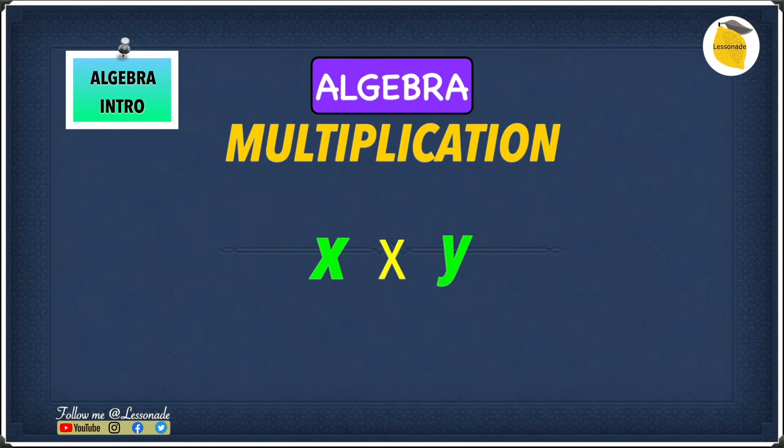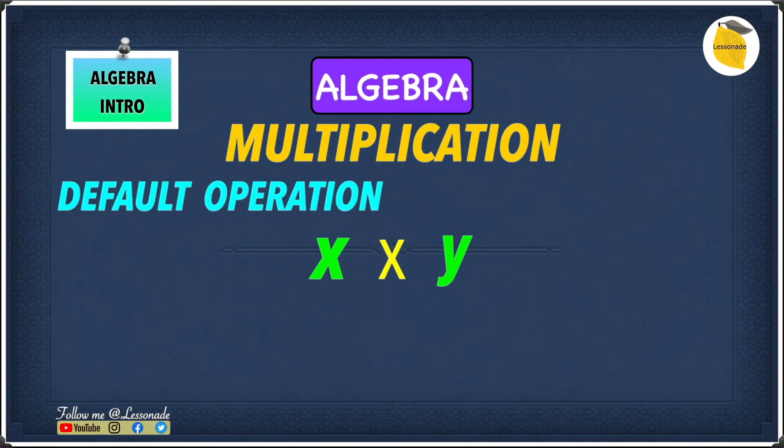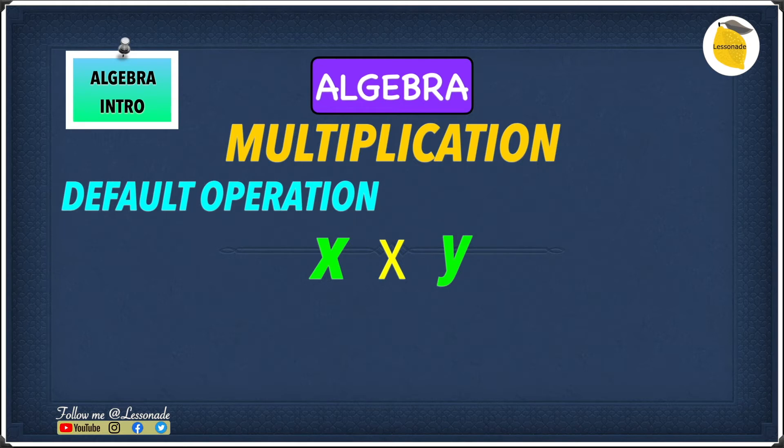The thing with x times y, or the thing with multiplication in algebra, is that multiplication is the default operation. So what do I mean by default operation?